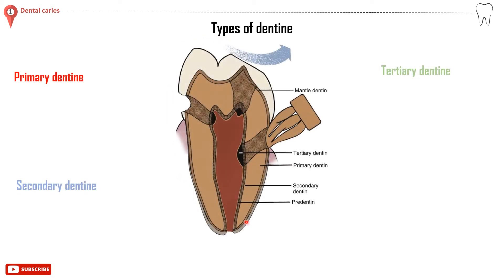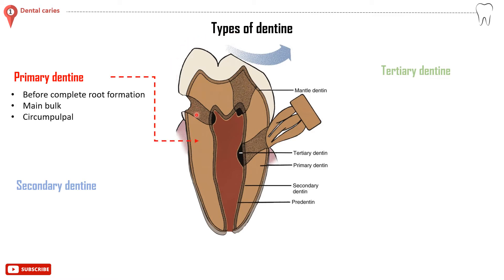This diagram shows different types of dentine. Number one: primary dentine — it forms before the complete root formation and forms the main bulk around the pulp chamber, hence it is called circumpalpal dentine. The outermost layer under the amelodentinal junction is called mantle dentine. Number two: secondary dentine — it forms after the complete root formation and deposits around the pulp roof and chamber, leading to its asymmetric size reduction or recession by age.